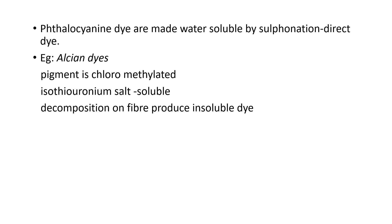To make phthalocyanine soluble, substituents are introduced. Copper-substituted phthalocyanine is one example. This concludes the discussion on phthalocyanine dyes, covering synthesis, structure, color, and influencing factors. Thank you.